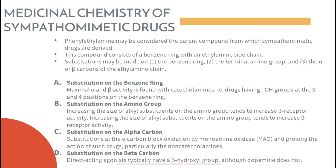For the medicinal chemistry of sympathomimetic drugs, first is substitution of the benzene ring — maximum alpha and beta activity is found with catecholamines. Next is substitution of the amino group: increasing the size of alkyl substituents on the amino group tends to increase beta receptor activity. Next is substitution on the alpha carbon: substitution at the alpha carbon blocks oxidation by MAO and prolongs the action of drugs, particularly the non-catecholamines. Next is substitution of the beta carbon: direct-acting agonists typically have a beta-hydroxyl group, although dopamine does not.